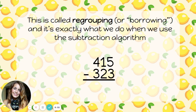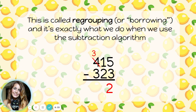This is called regrouping, or sometimes borrowing, and it's exactly what we do when we use the subtraction algorithm. We start with the ones — five minus three is two, no problem there. The problem came with the tens: we couldn't take two tens away because we only had one ten. So we took away a group of a hundred, leaving three hundreds, and broke it apart into ten tens. We added those ten tens to the other ten to make eleven tens, then subtracted to be left with nine tens and no hundreds. So the answer is ninety-two.